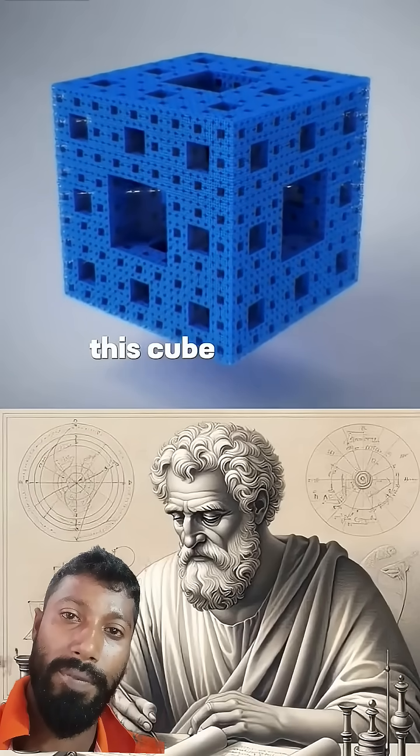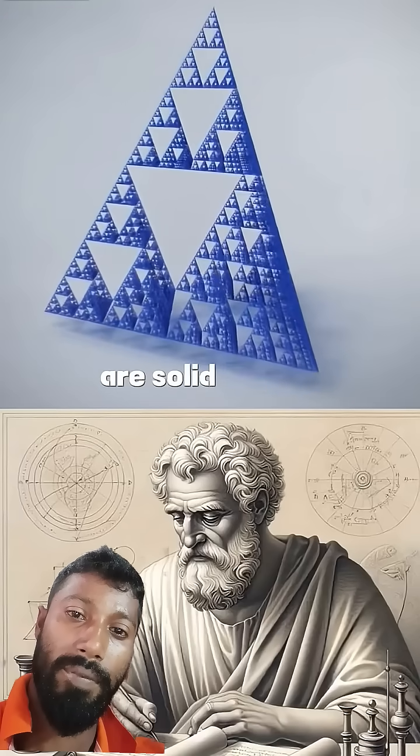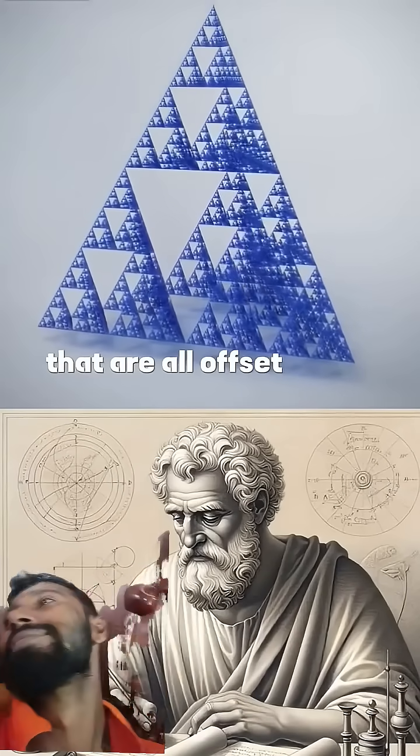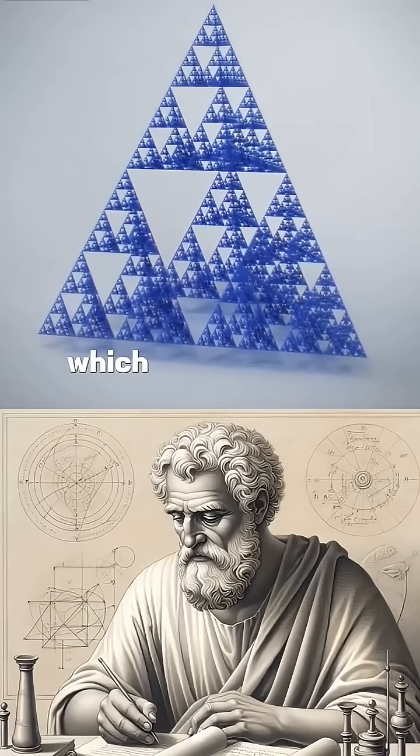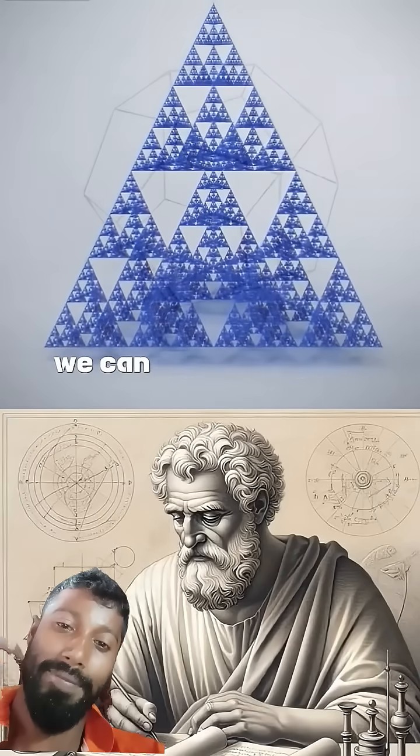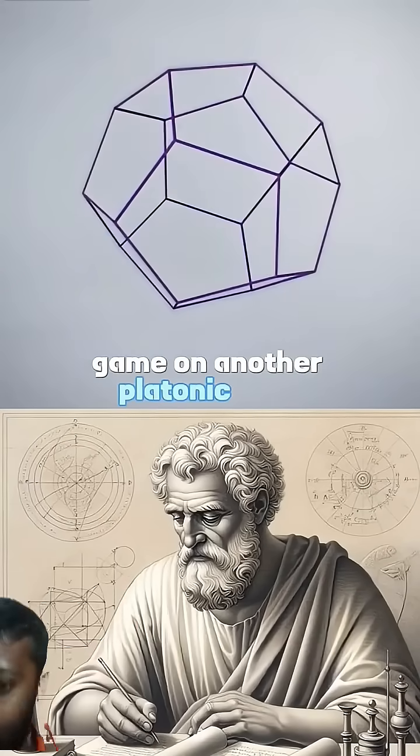This cube and the tetrahedron we used before are solid shapes that are all made up of the same regular faces that are all offset by the same angle, which puts them in a group of shapes called the platonic solids. We can try running the chaos game on another platonic solid.